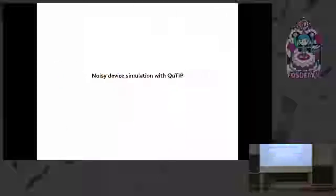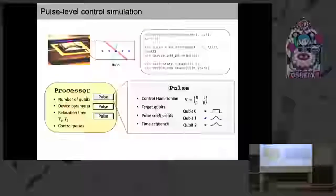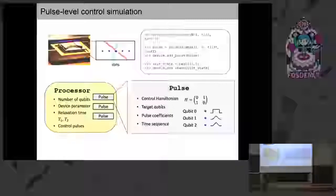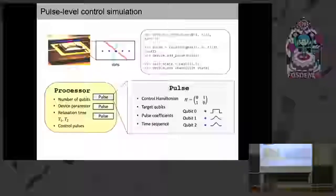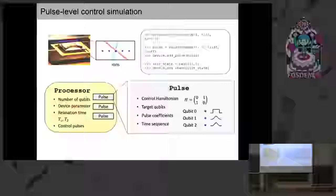So with that, I'll go to the second part: noisy device simulation, this new module in Qtip. Imagine you have some quantum chip, and the way you want to control your qubits is through some control pulse — you either shine a laser on it or give it some microwave signal. This kind of quantum chip is represented in our simulator in a class called Processor. It has information like the number of qubits, the typical relaxation times T1 and T2, and most importantly, your control pulses. The control pulse is the basic element in our simulation, characterized by the Hamiltonian describing the interaction, the target qubits, the pulse coefficients, and the time sequence — the last two describing the shape of your pulse.